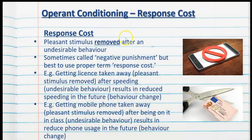The other type of punishment is response cost. This is when a pleasant stimulus is removed after an undesirable behavior. This is often the most common type of punishment that students are familiar with. Sometimes this is called negative punishment, but it's better to use the proper term response cost. An example, sticking with driving, is having your license taken away after speeding. The undesirable behavior is the same, but the punishment type is different — getting your license taken away, which is a pleasant stimulus, is definitely going to reduce speeding in the future.